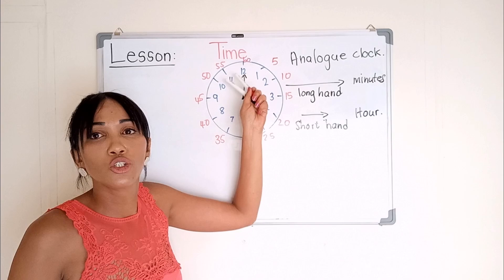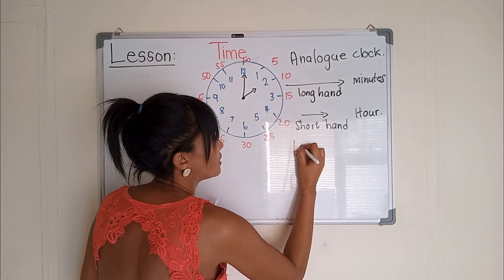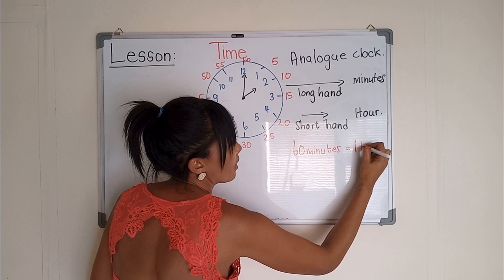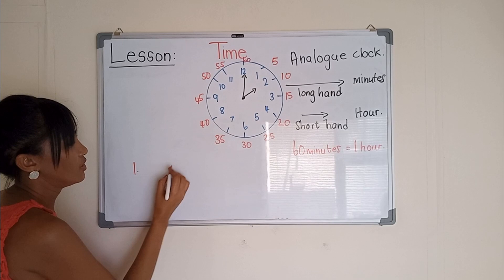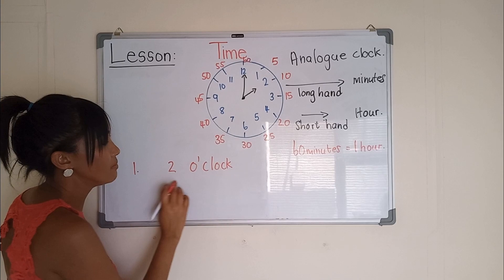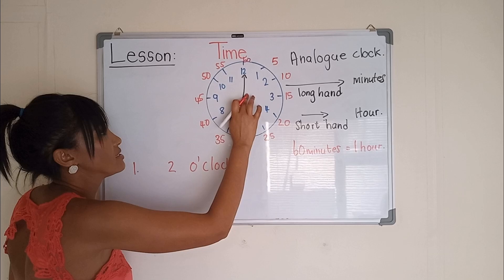So 60 minutes is equal to one hour. That's why 60 is on top of 12. So I'm just going to write it here: 60 minutes is equal to one hour. On the board, my short hand is on two and my long hand is on the 12, so that gives us a time of two o'clock. Remember you need to write out the name o'clock.